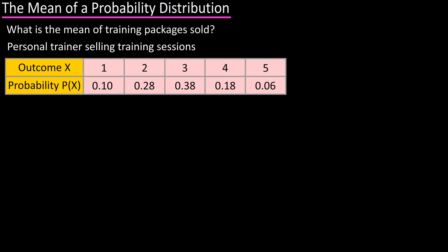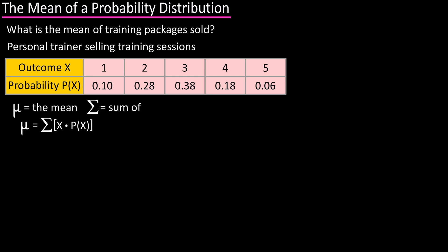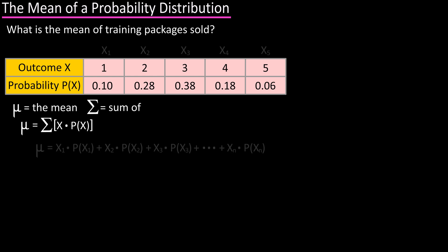The formula for finding the mean of a discrete probability distribution is mu — this character represents the mean — equals the sum of the quantity x times the probability of x. Written out in long form, this equation looks like this: mu equals x1 times the probability of x1, plus x2 times the probability of x2, and so on, to however many possible values x can take on.